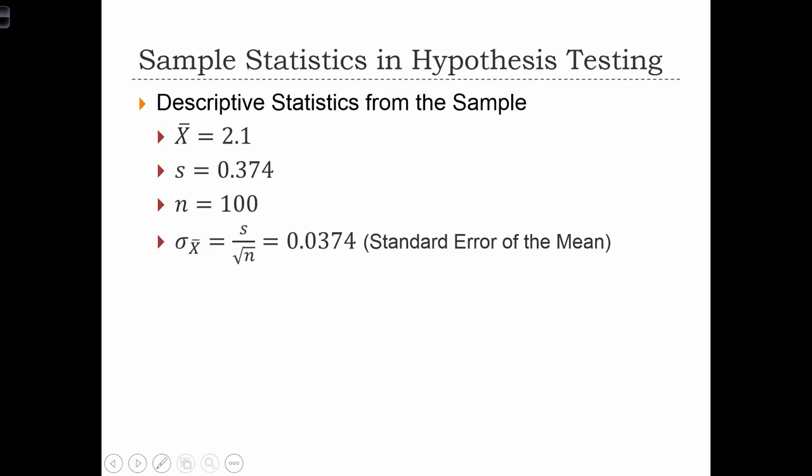So based on the question, we can derive the following descriptive statistics. The sample mean was 2.1. The standard deviation of the sample was 0.374. The sample size was 100. And based on the standard deviation and the sample size, we can compute the standard error of the mean, 0.0374.